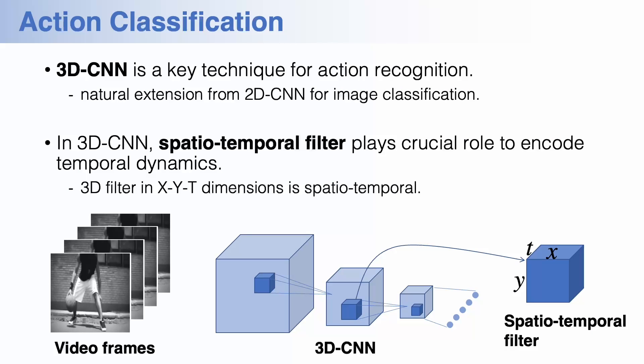For action classification, 3D CNN is a key technique to produce high performance. It's a natural extension from standard 2D CNN, which is widely applied to image classification. The 3D CNN uses spatial temporal 3D convolution filters to encode spatial appearance and temporal dynamics at the same time. In other words, the spatial temporal filters characterize 3D CNN.